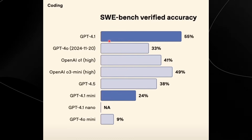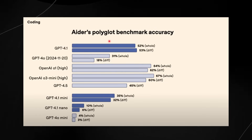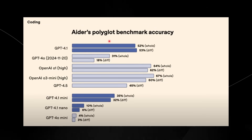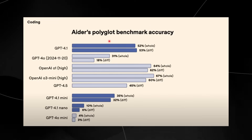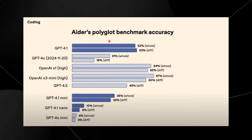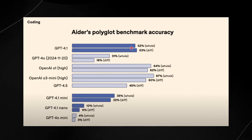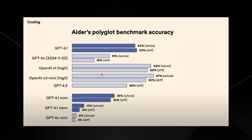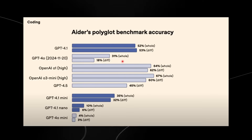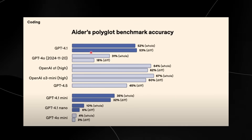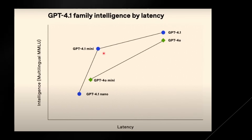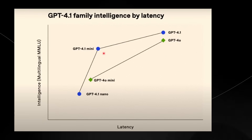Another benchmark more interesting to developers shows how accurate GPT-4.1 is compared to GPT-4.0 — a dramatic improvement from 31% to 52%. The o1 reasoning models are in a completely different category, but for a model that is much cheaper and faster, this is really useful for developers. This graph helps visualize where GPT-4.1 sits, with intelligence on the left axis and latency on the bottom.